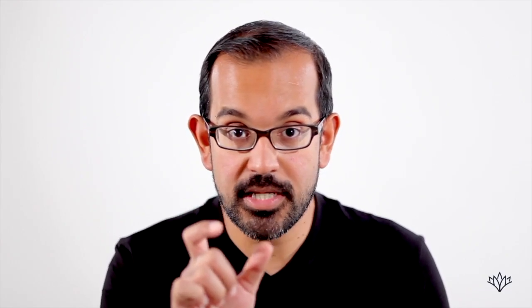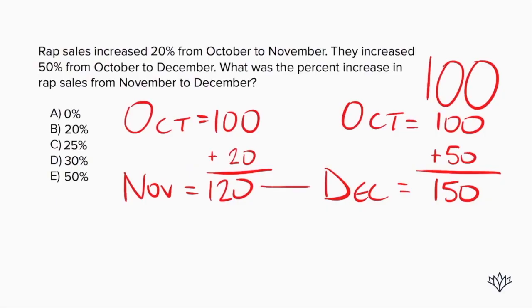Now this is really important. Let's focus on what it's asking: what was the percent increase in wrap sales from November to December? We're comparing from November to December, and the numbers there are 120 and 150. When we're dealing with a percent increase, here's how you do it: it's the absolute value of the difference over our starting value, times 100.